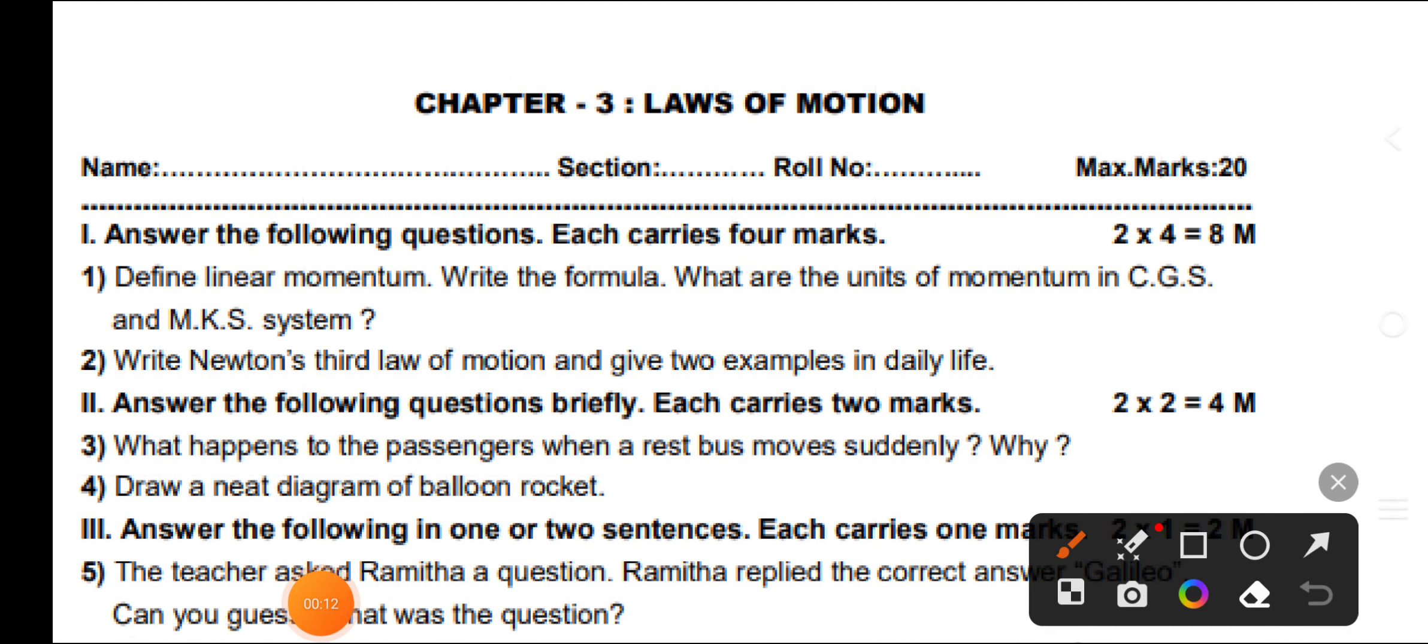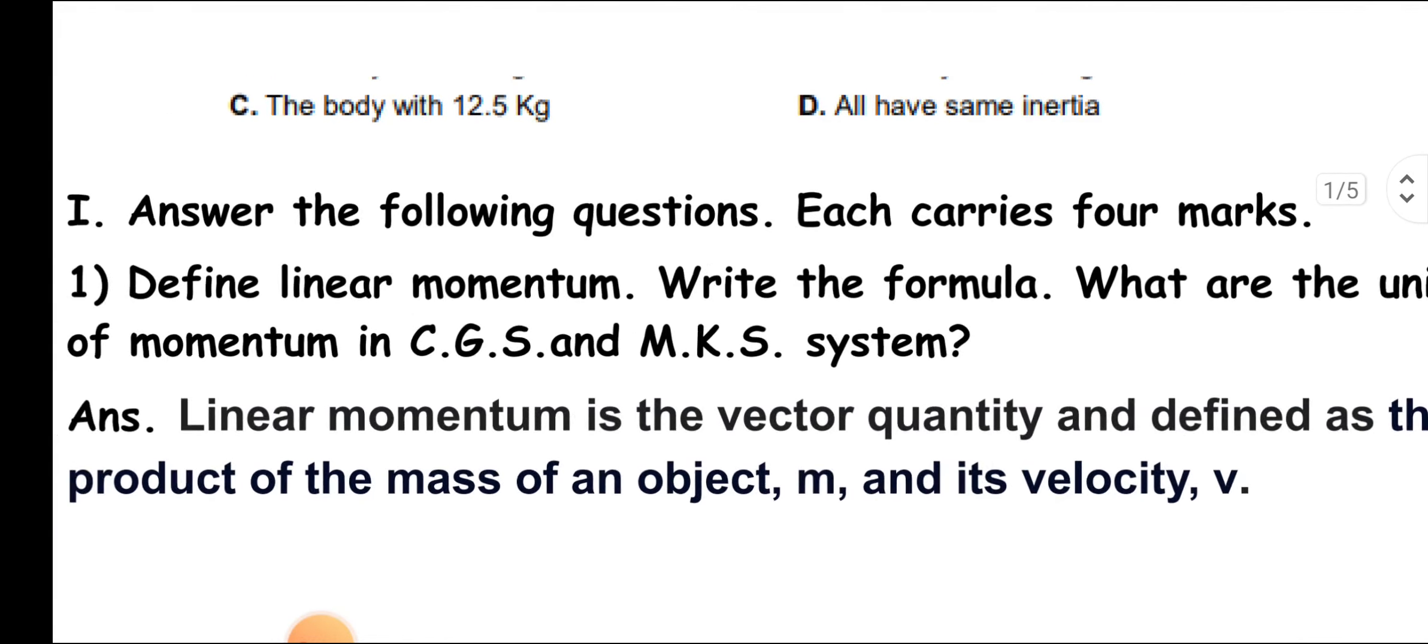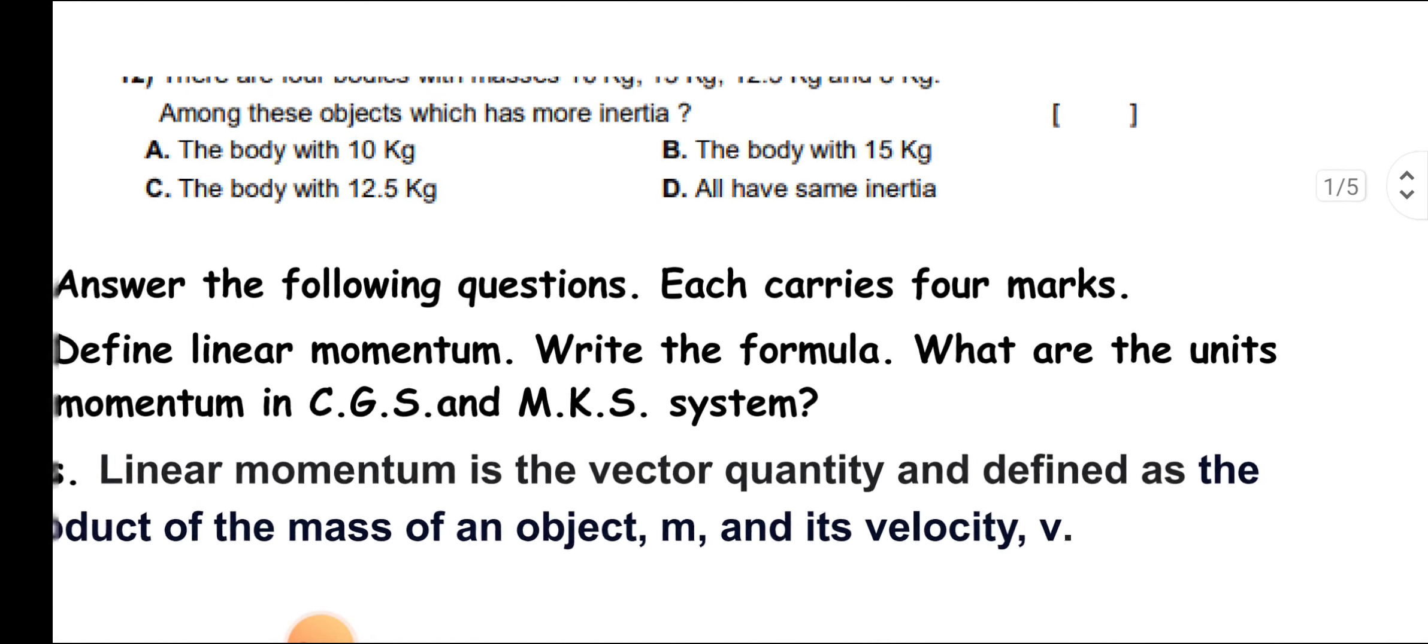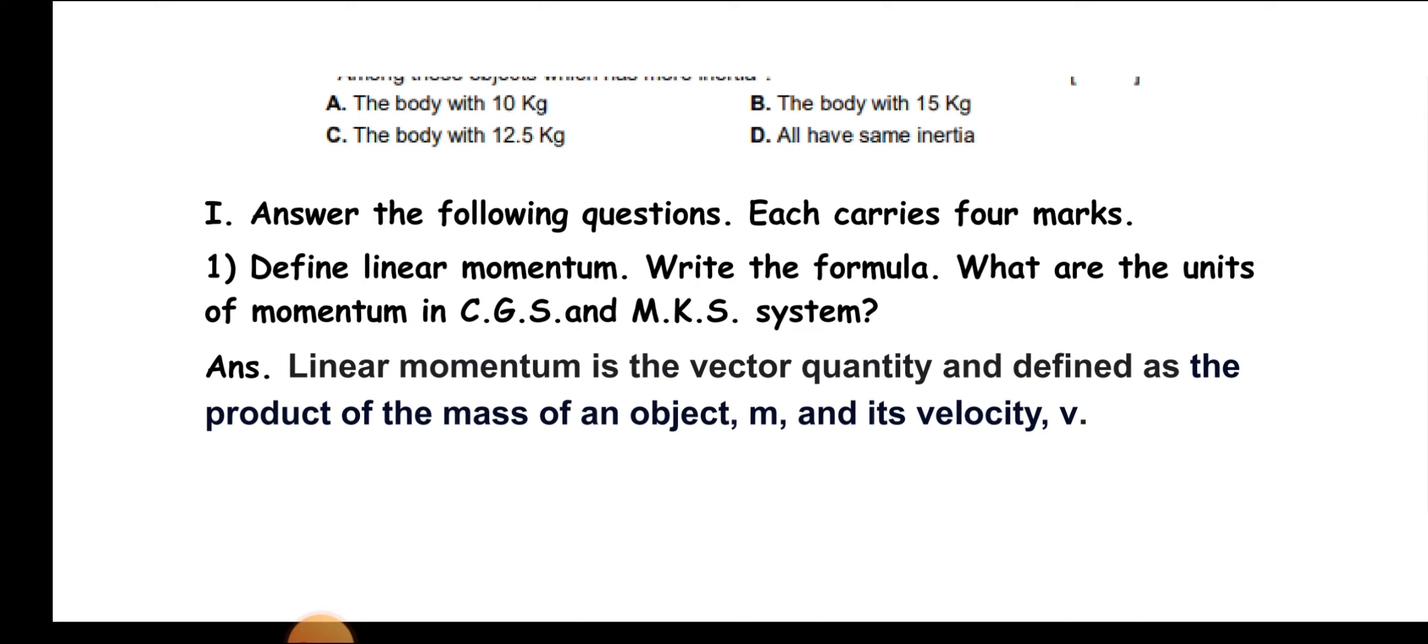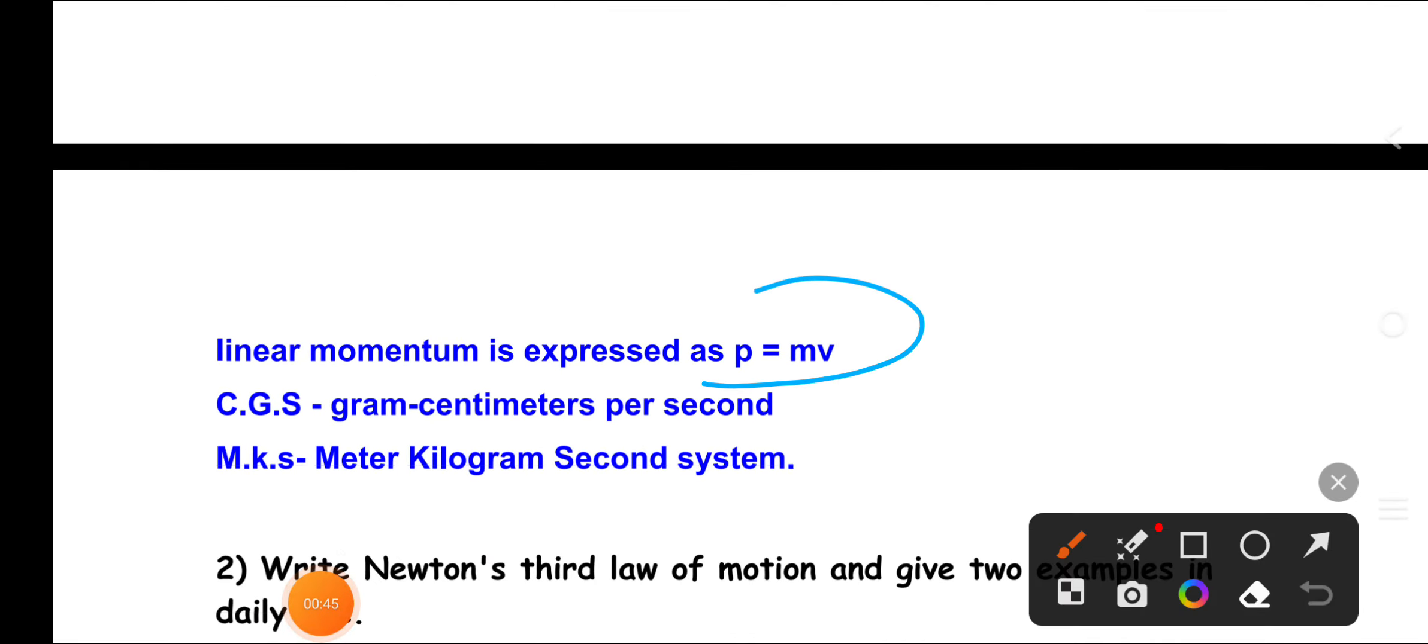Question number 1: Answer the following questions. Each carries four marks. First, define linear momentum, write the formula, and what are the units of momentum in CGS and MKS systems? Answer: Linear momentum is a vector quantity defined as the product of the mass of an object m and its velocity v. Its formula is expressed as p equals mv. Its units are CGS gram centimeter per second and MKS kilogram meter per second.